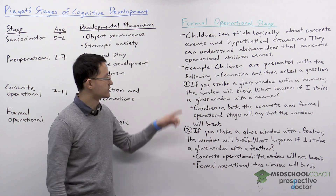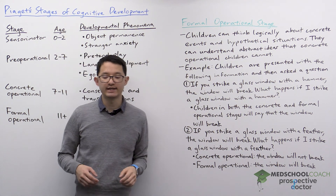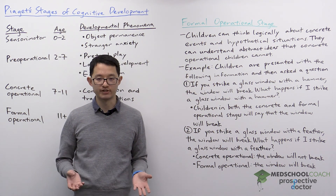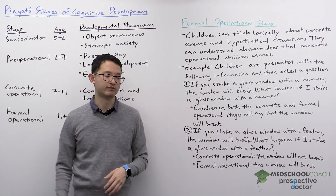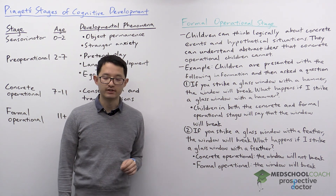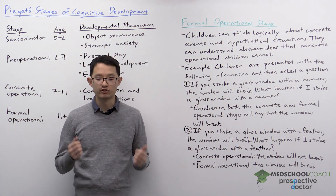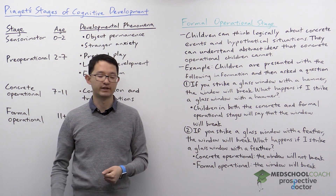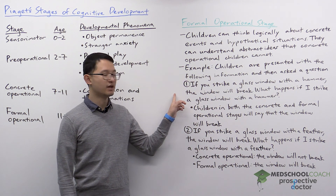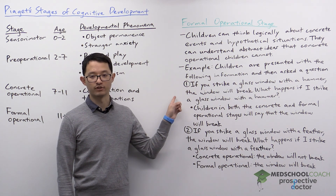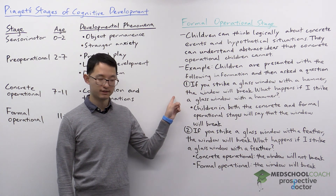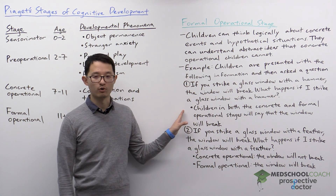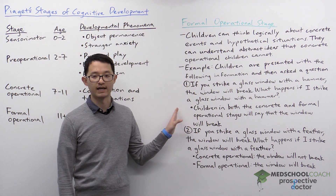To illustrate this, we can consider this example. Children are presented with two situations and questions with each of them. In the first situation, they're told: if you strike a glass window with a hammer, the glass window will break. Then they're asked: what happens if I strike a glass window with a hammer? In this case, both children in the concrete and formal operational stages will say that it breaks.